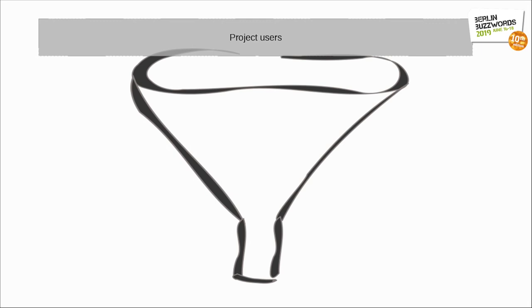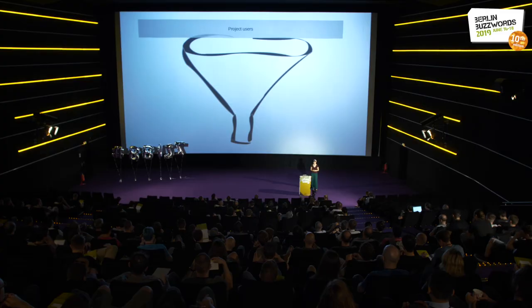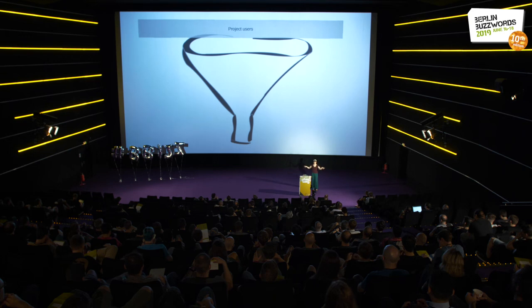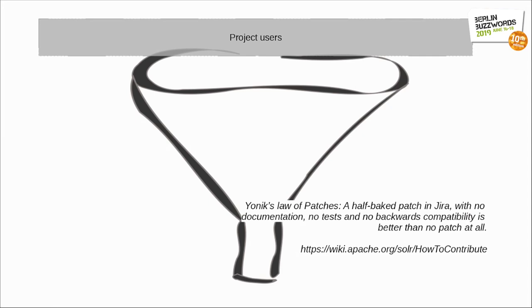Who's part of this community making these decisions? In my personal experience, it starts with the users — that's everyone here in the room. If you've been in the Lucene community long enough and you've been digging through the wiki, you will run across the Onyx Law of Patches: a half-baked patch in JIRA with no documentation, no tests, and no backwards compatibility is better than no patch at all.